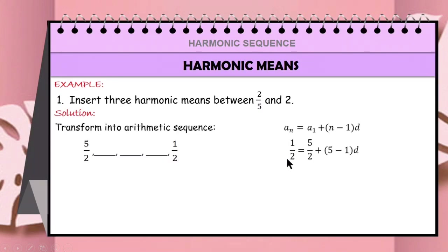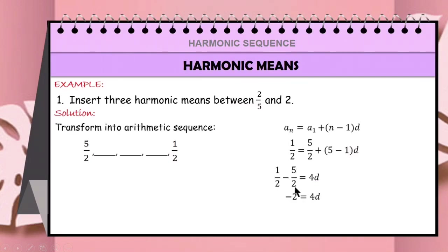Simplify: 5 minus 1 is 4, copy d, then transpose 5/2 to the left side. So 1/2 minus 5/2 is −2 (since 1 minus 5 is −4, and −4 divided by 2 is −2). Divide the equation by 4 to solve for d. So d is equal to −2/4, or −1/2 in lowest form.